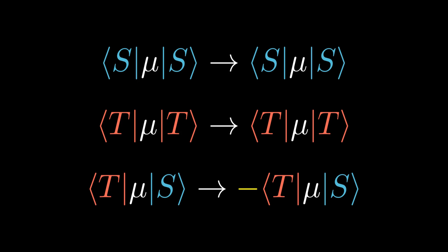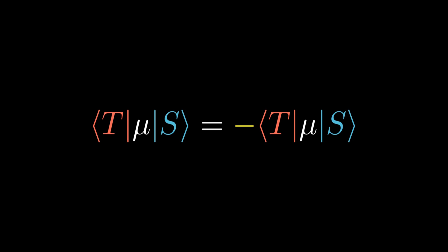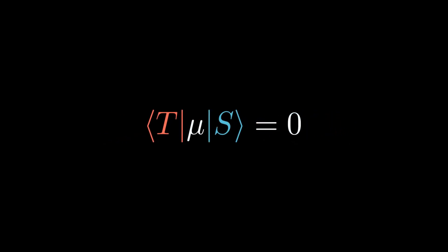Since the transition dipole moment quantifies the strength of the dipolar migration of charge during a transition, it cannot be dependent on how we label the electrons. The only number that equals its own negative is zero. This forms the basis of the selection rule that forbids singlet-triplet transitions.